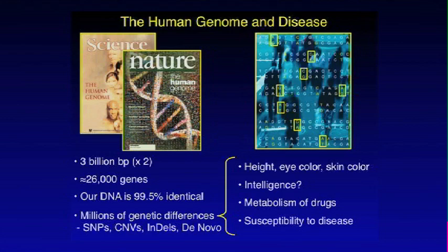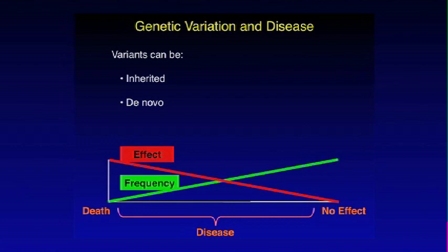Genetic differences will probably have some influence on traits that we're a little less comfortable thinking about having a genetic component — things like intelligence will probably have some genetic component. I know already of groups that are looking at this. Metabolism of drugs is somewhat genetic, and certainly susceptibility to disease has some genetic component. So let's think about this relationship between genetic variation and disease.